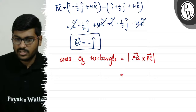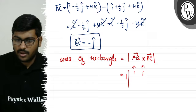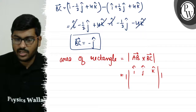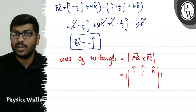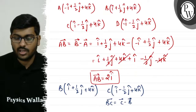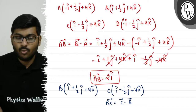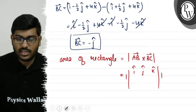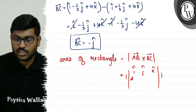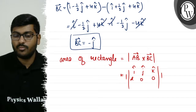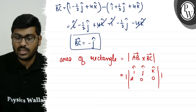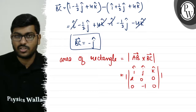The area of the rectangle equals the modulus of AB vector cross BC vector. We set up the determinant with i-cap, j-cap, k-cap. The AB vector has components: i-cap coefficient 2, j-cap coefficient 0, k-cap coefficient 0. The BC vector has components: i-cap coefficient 0, j-cap coefficient minus 1, k-cap coefficient 0.